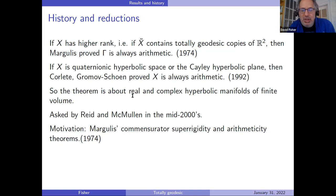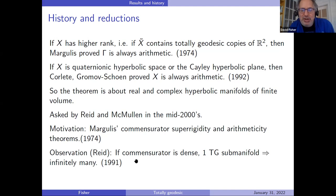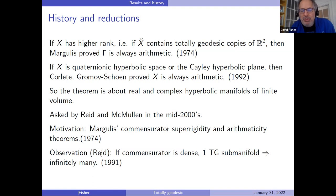What's the motivation for this? One motivation is Margulis' commensurator super rigidity and arithmeticity theorems, which apply to the hyperbolic geometry setting. There's also an observation of Reid that says if the commensurator of the lattice is dense, then one totally geodesic submanifold implies there are infinitely many. This is really the same observation from the first slide — this is how he showed there were a lot of totally geodesic submanifolds.